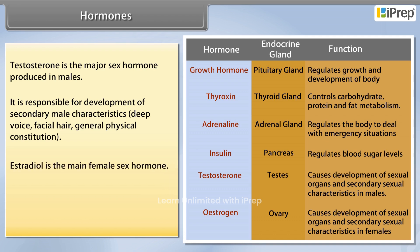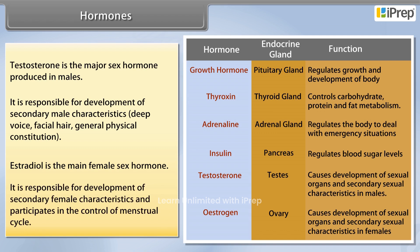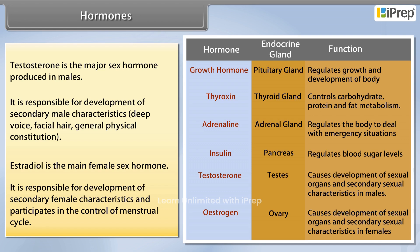Estradiol is the main female sex hormone. It is responsible for the development of secondary female characteristics and participates in the control of the menstrual cycle.